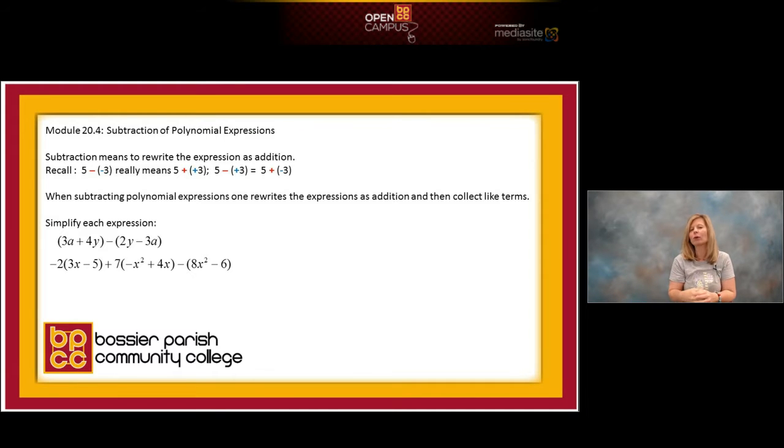Not as subtraction I can rewrite it as addition. And when I rewrite it as addition it becomes 5 plus, there's the addition. And I make whatever term is behind the opposite. So that would really be 5 plus a negative 3. And if 5 is positive and 3 is negative I subtract and I get a 2. And that's what we're going to plot.